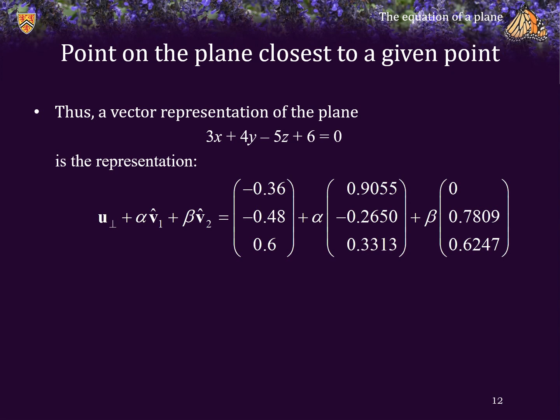A vector perpendicular to the plane while also being on the plane, negative 0.36, negative 0.48, 0.6, plus alpha times one ortho-normal vector, plus beta times a second ortho-normal vector.